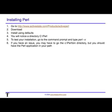Installing Perl is pretty straightforward. We go to activestate.com's website, download Perl, and install it using all the defaults. You'll find a Perl directory on your hard drive. We can test the installation by going to the command prompt and typing 'perl -v', which will give you the version of Perl that you have. If you have an issue, typically the path may not have been updated within your environment variables, so you may have to go to the Perl directory and try this again.